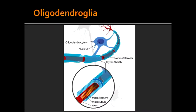Oligodendroglia. What is the function of oligodendroglia? Oligodendroglia's function is to myelinate CNS axons. Each oligodendroglia myelinates multiple CNS axons, up to 50 each.